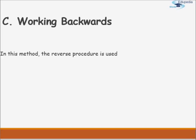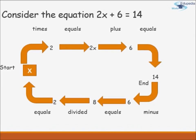The third method is working backwards, where you reverse the procedure used to build the equation. For 2x plus 6 equals 14: starting with x, you multiply by 2 to get 2x, then add 6 to get 14. Working backwards — you subtract 6 to get 8, then divide by 2 to get x equals 4. The arrows in the diagram show: minus 6 gives you 2x equals 8, then divide by 2 gives x equals 4.